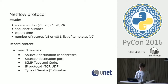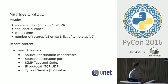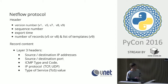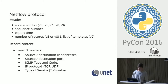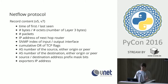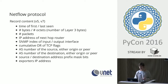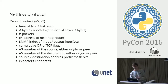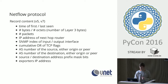Each record contains the common identifier, which is basically the layer three headers: source and destination IP address, source and destination port — or type and code for ICMP — and type of service. Besides that, it also contains valuable information such as time of first and last packet seen, from which you can calculate flow duration, bytes transmitted, and number of packets.